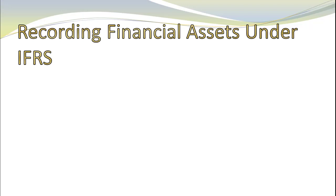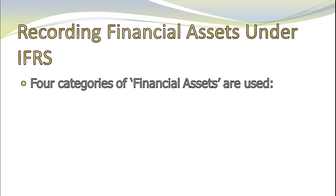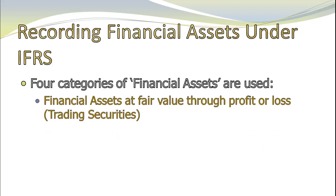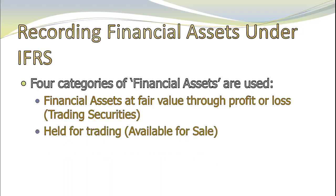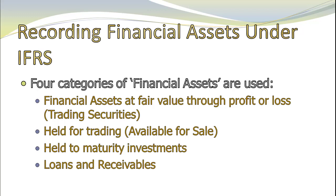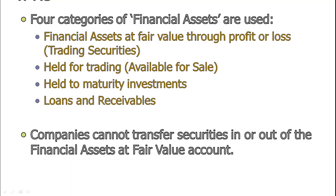Let's take a second and talk about financial assets under IFRS. Instead of the three categories we normally use, IFRS has four categories. We have financial assets at fair value through profit or loss — what we call trading securities, they call held-for-trading. What we call available-for-sale, they also call held-for-trading. They have a held-to-maturity investment account — same as ours. And they also keep a separate loans and receivables account. Other than having four categories instead of three, the only other significant difference between US GAAP and IFRS is that under IFRS you cannot transfer securities in or out of the trading portfolio — once you put it in that account, it stays there. You can transfer between held-to-maturity and available-for-sale, but you can't go in and out of trading.